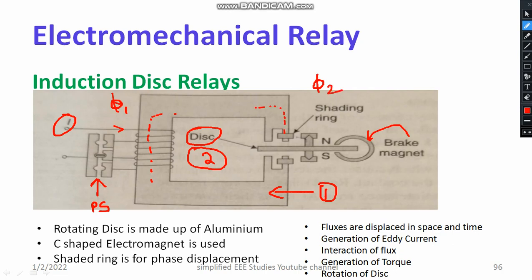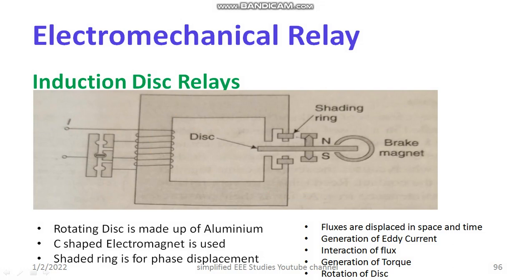Both fluxes will be out of phase. Due to the difference in flux, torque is produced at the aluminium disc, and thereby the aluminium disc starts operating. If the aluminium disc needs to be held in a desired stationary position, brake magnets are employed. This is how the induction disc relay operates.